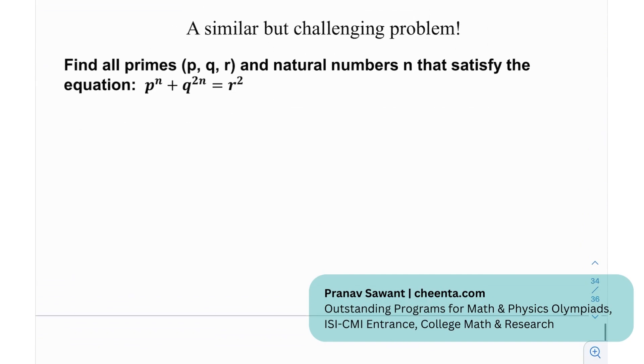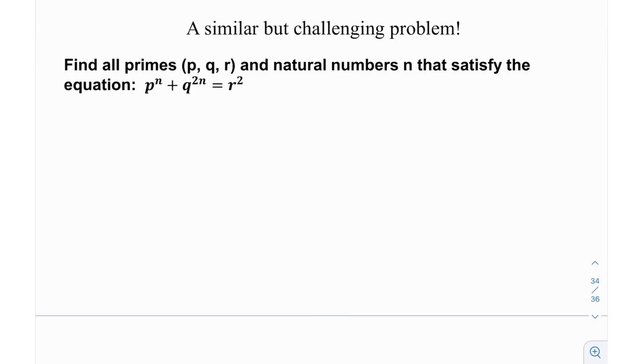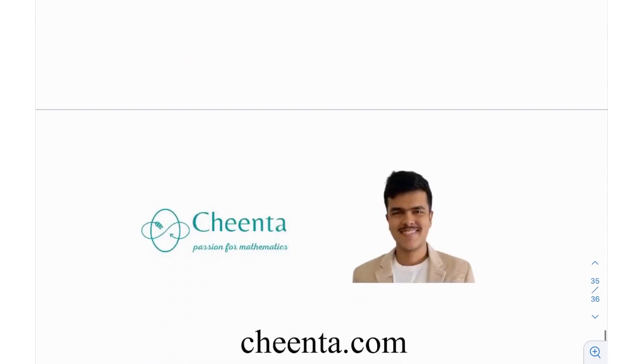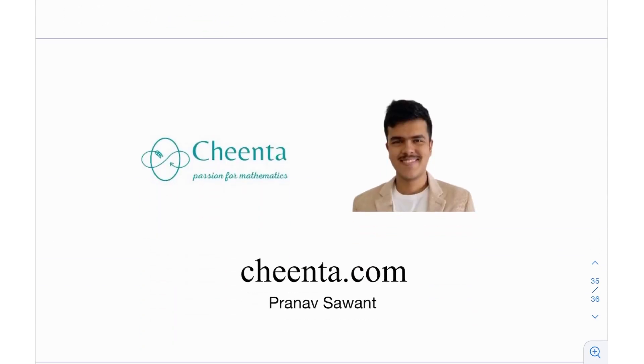At the end, we have a similar challenging problem. This is again related to primes and a Diophantine equation. Find all primes p, q, r with natural numbers n that satisfy this given equation: p^n + q^2n = r^2. This is a pretty nice problem, and if you're able to solve it or make any progress on it, let me know in the comments section. And until then, I'll see you in the next video. Thank you very much and bye-bye.